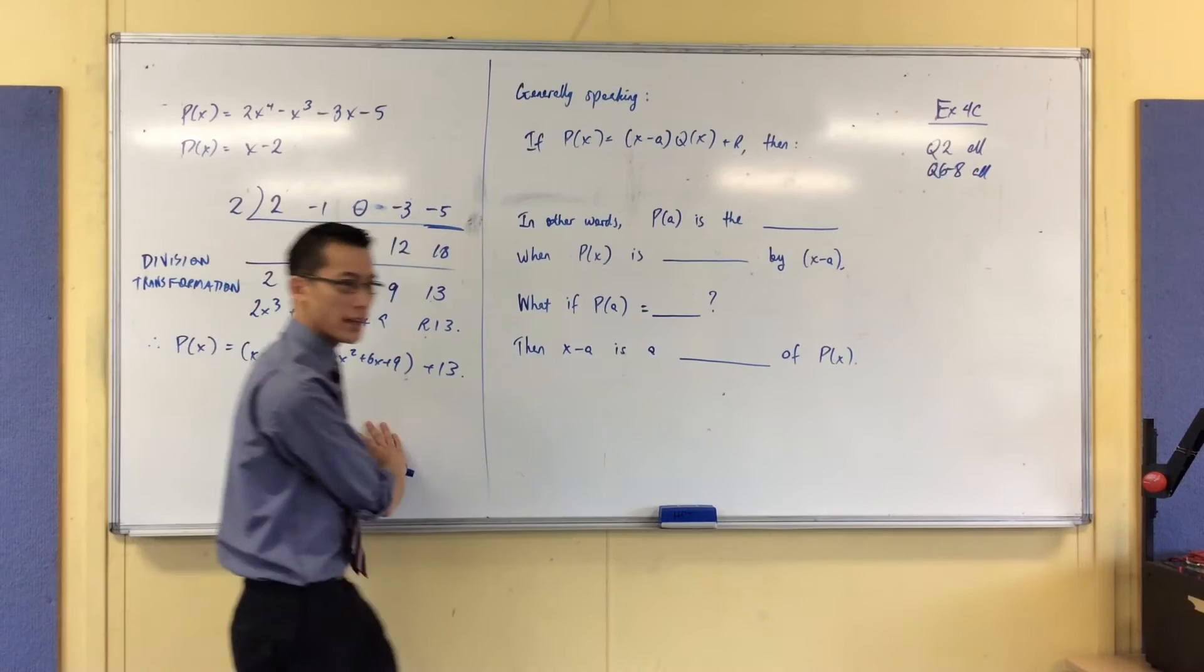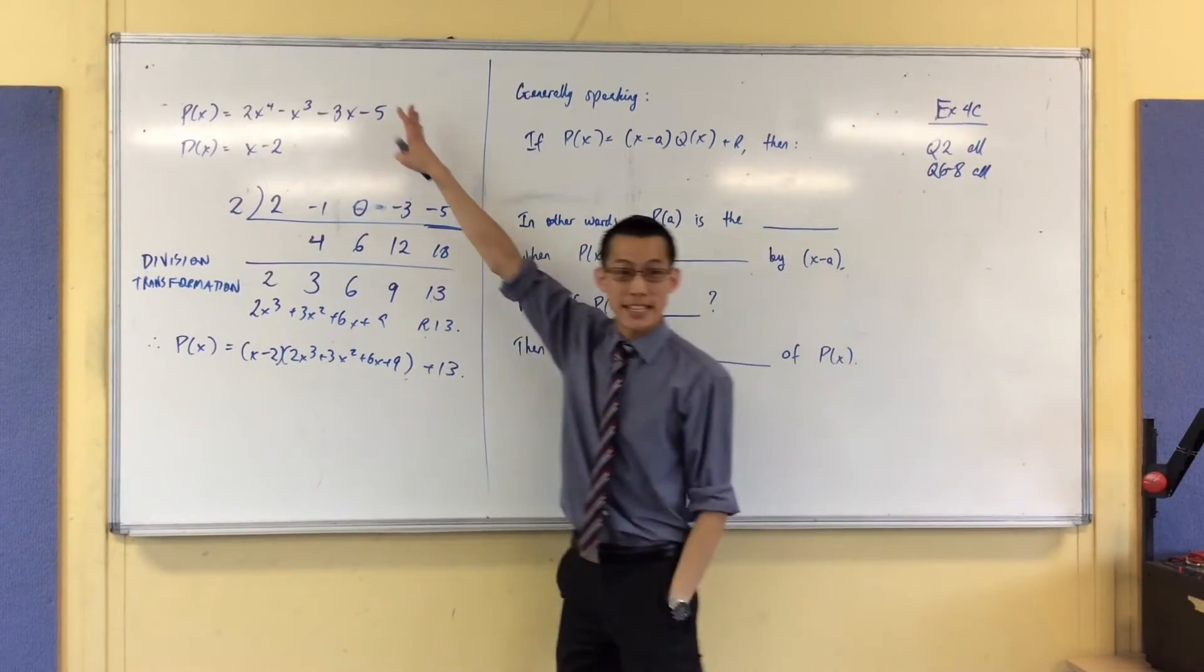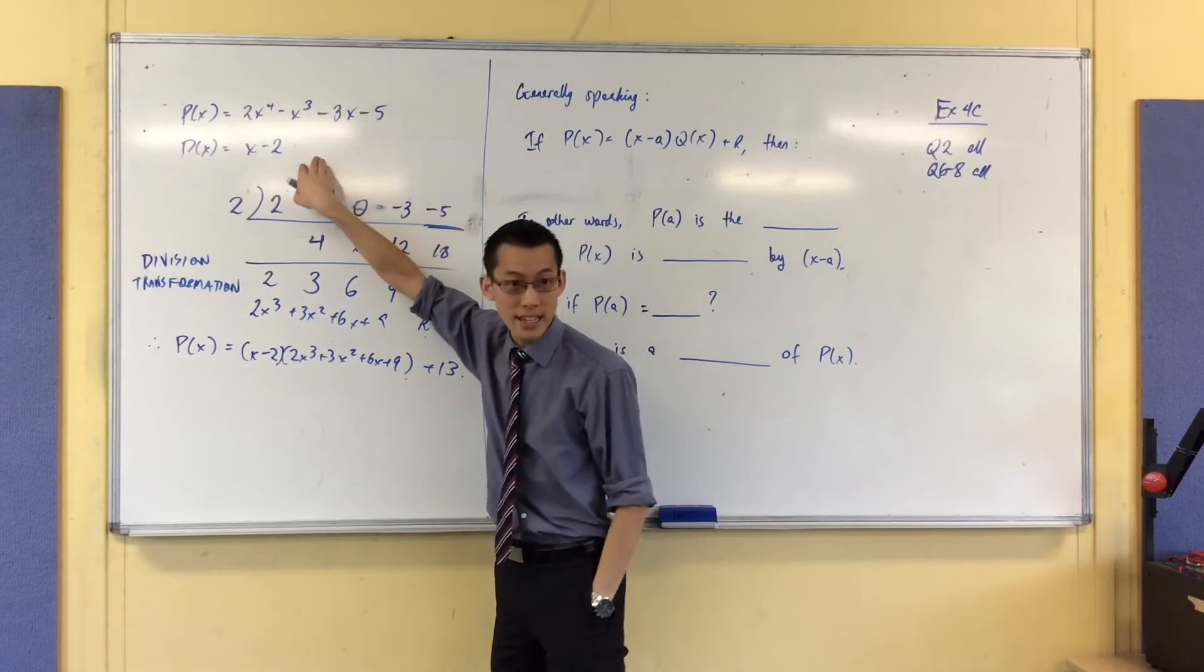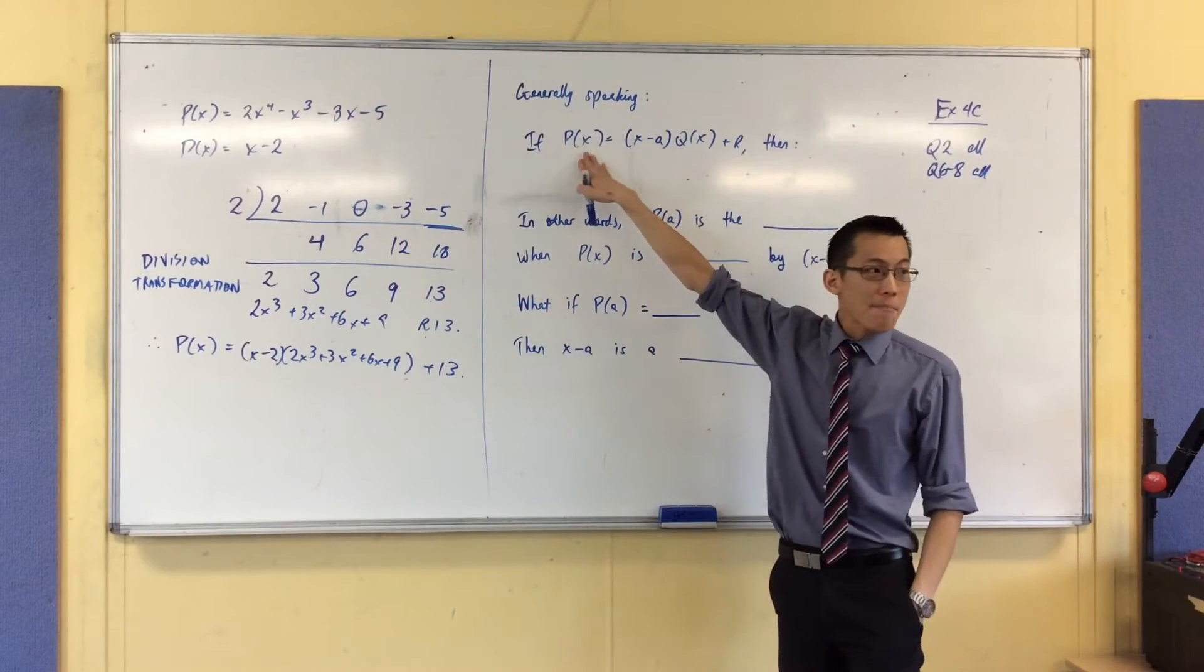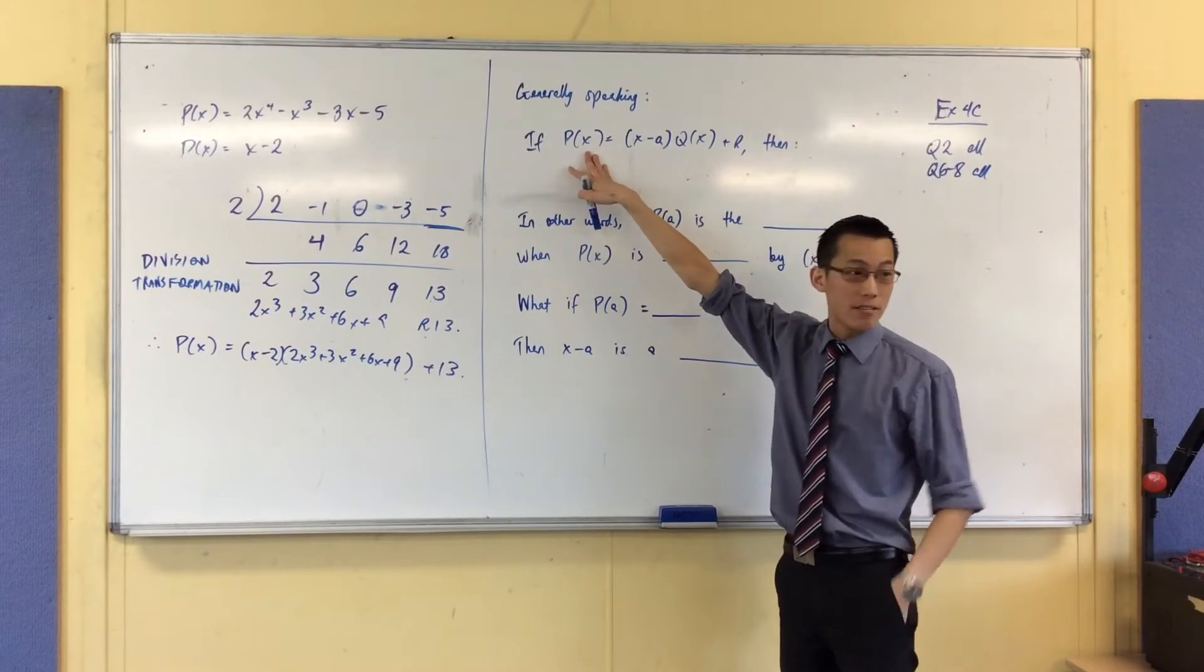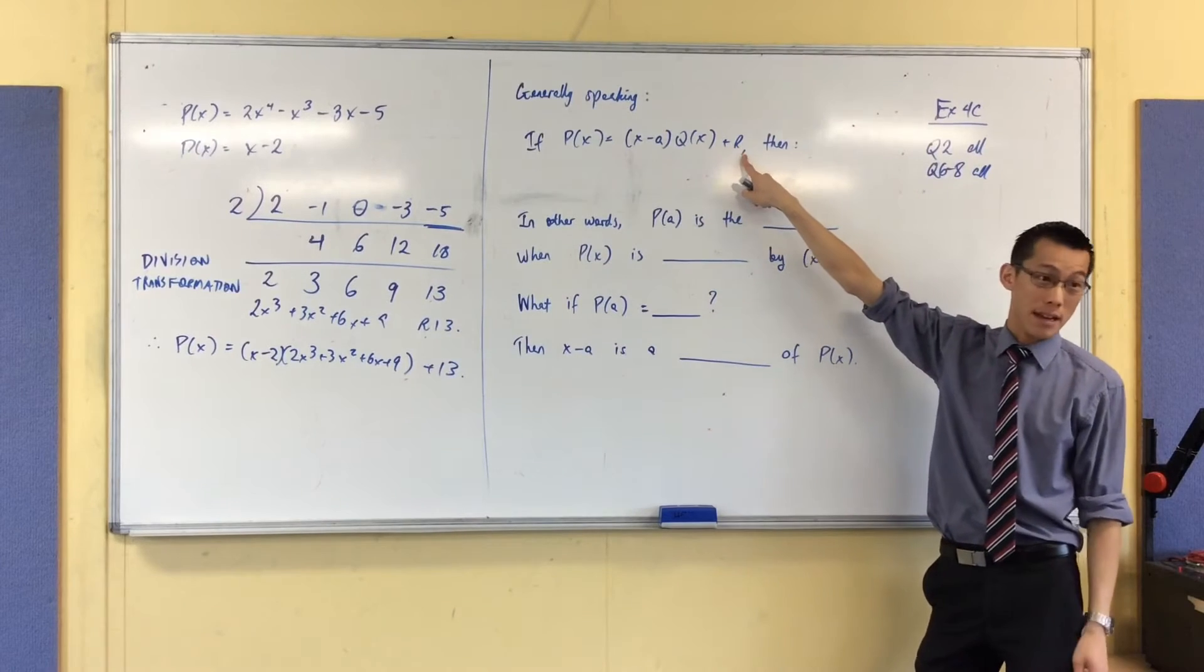So what I'm going to do from this is I can make a general statement, not just this particular dividend and this particular divisor. I can say, look, any polynomial, I can express it in this division transformation way. Divisor times quotient plus remainder.